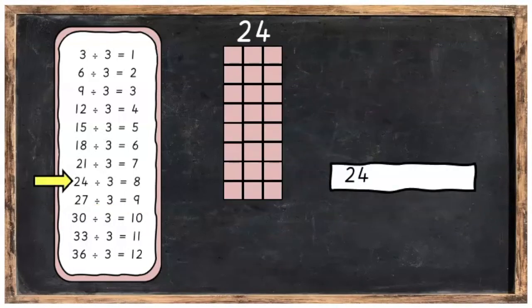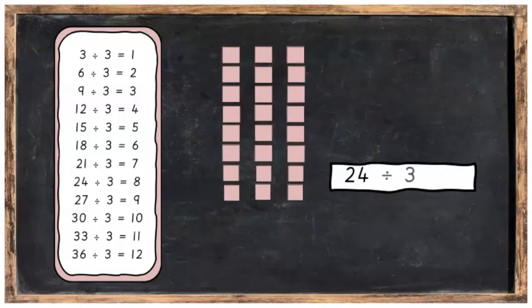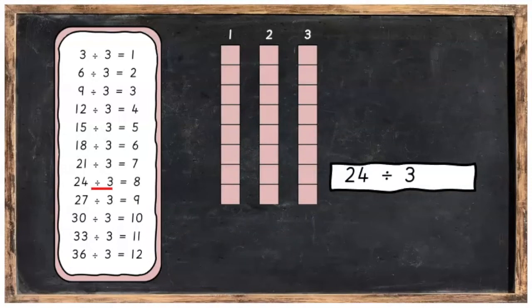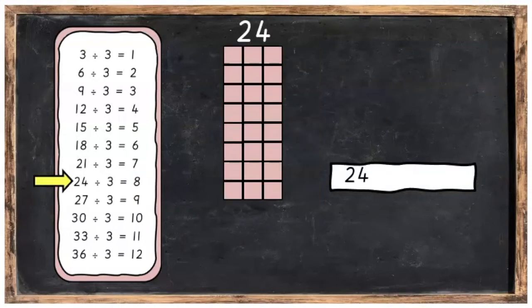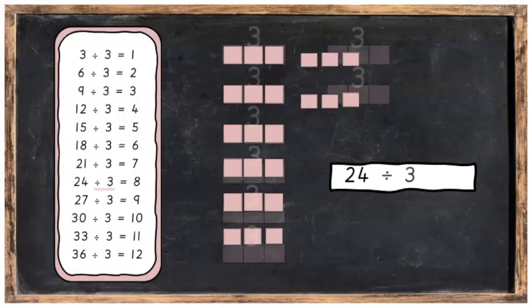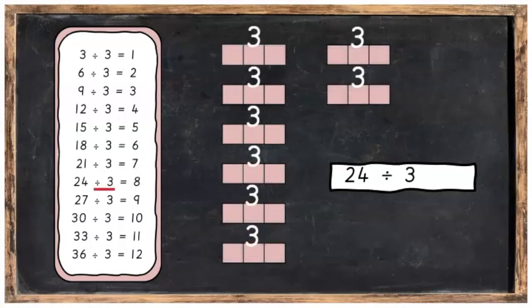24 divided into 3 equal parts, you're going to have 8 in each part. Or 24 divided into 3's is going to give you 8 groups of 3.